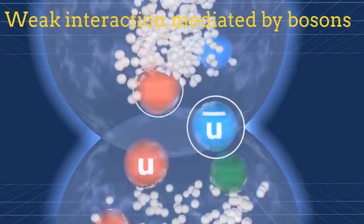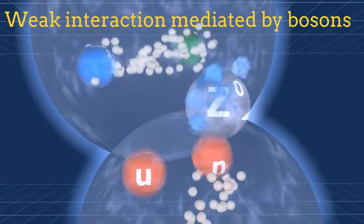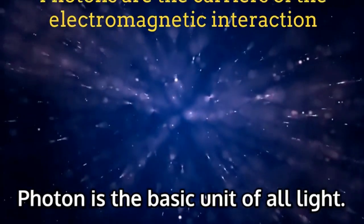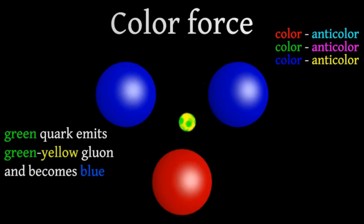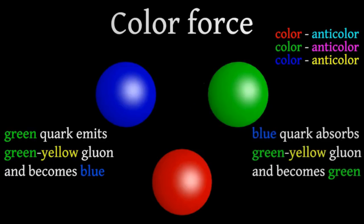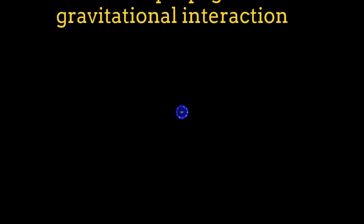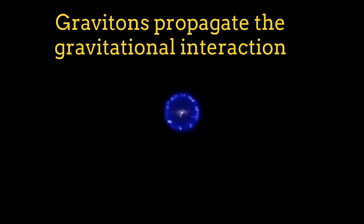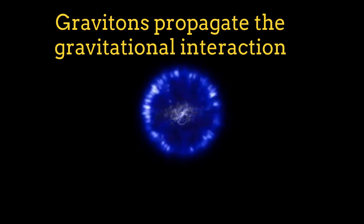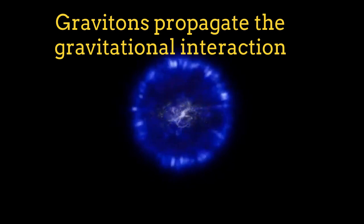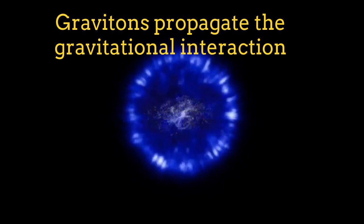The weak interaction is mediated by the bosons Z and W. Electromagnetism, on the other hand, is mediated by photons, and the strong interaction has the gluons as mediators. Then it is expected that gravity, as a fundamental interaction, must be mediated by some particle. If there is a quantum theory of gravity, this is what we should expect.